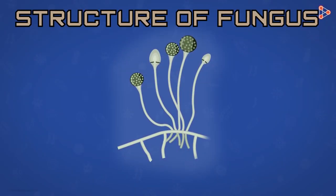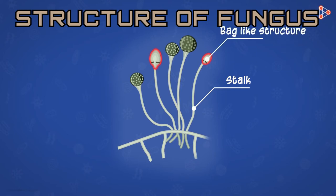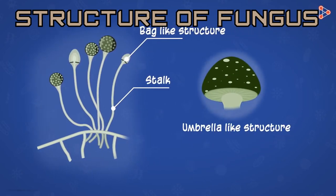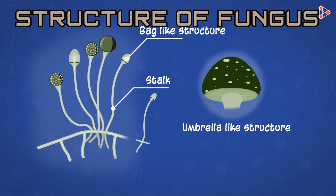The multicellular body usually consists of a stalk-like structure and a cap on top of it. This cap comes in various forms — some may have a bag-like structure, others may have an umbrella-shaped structure. Both of these are dedicated to a special role: they contain spores of the fungi, which can be dispersed to give rise to new fungal bodies on germination.